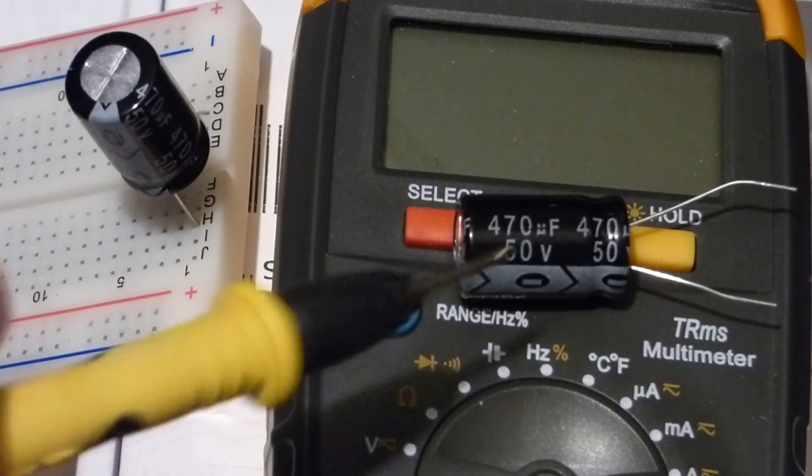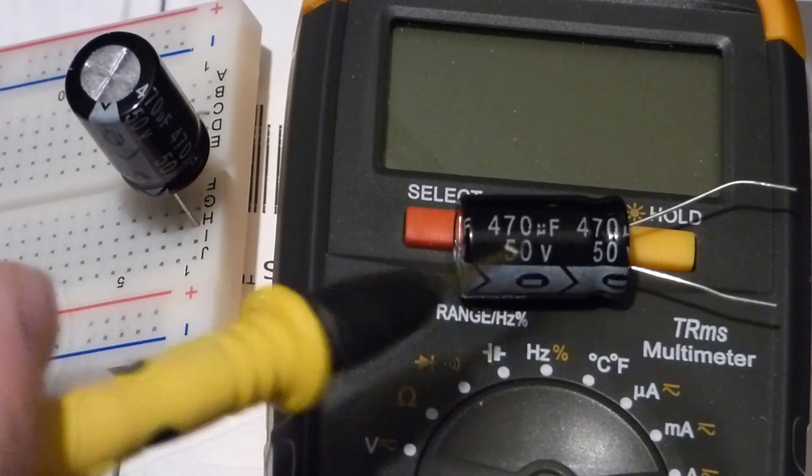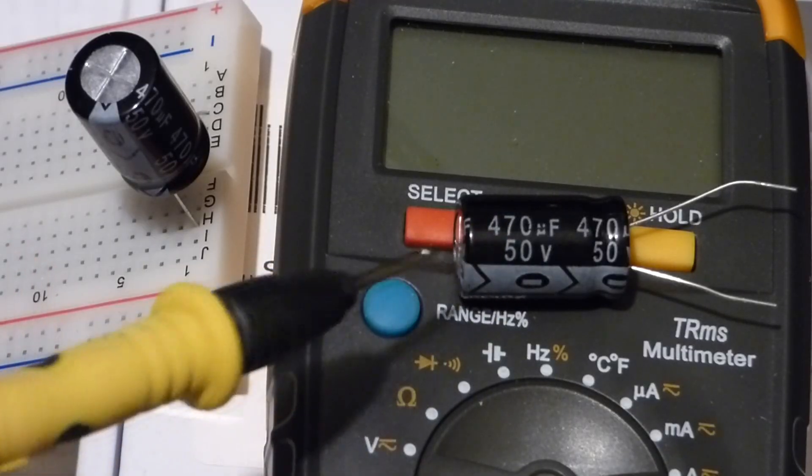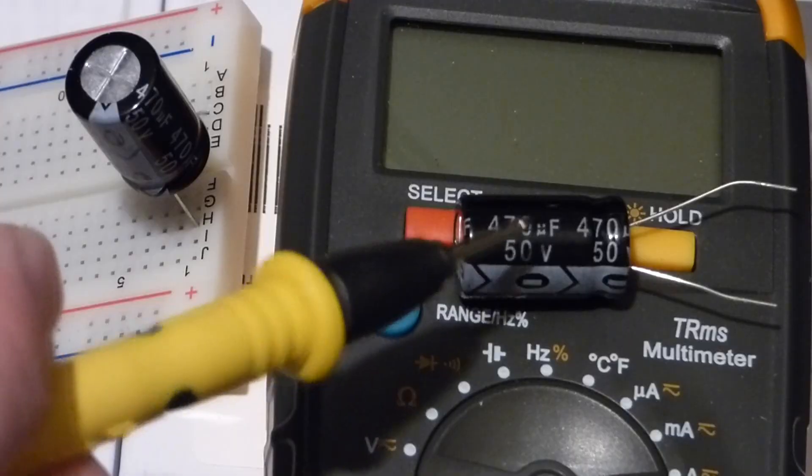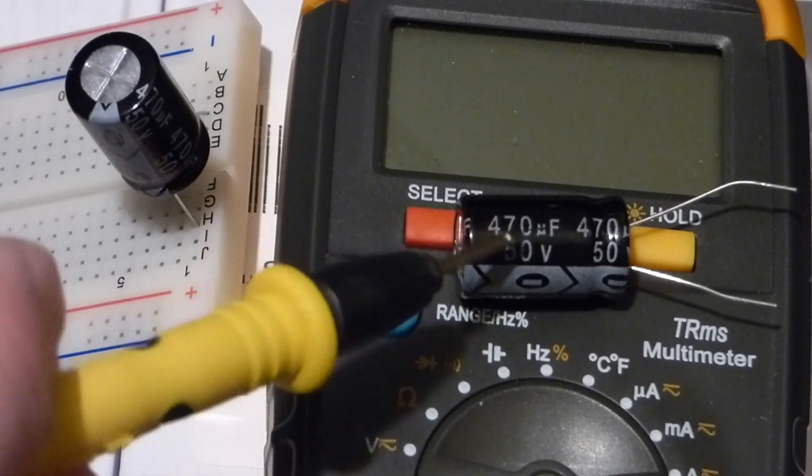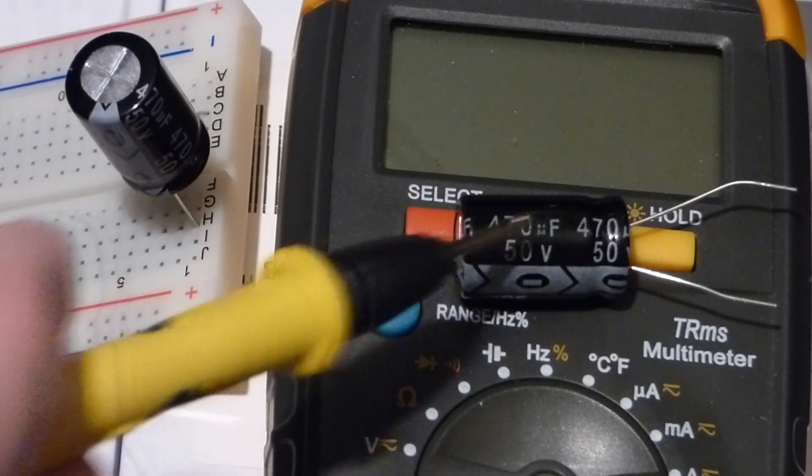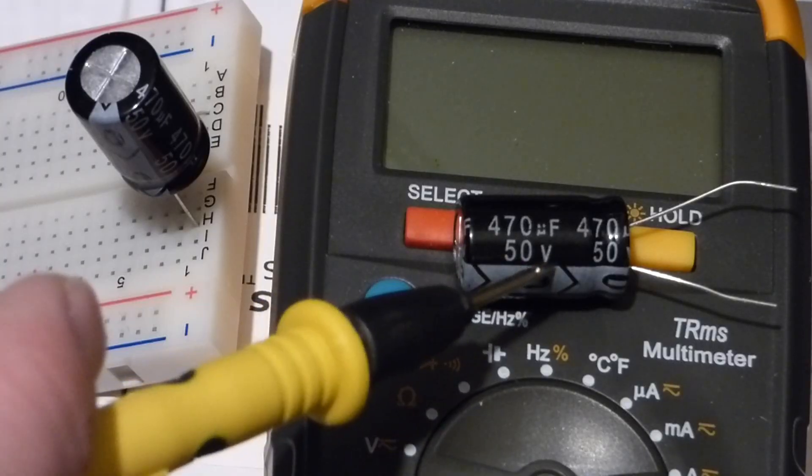In this video we're going to be measuring capacitors in series and in parallel. We're going to be mostly using capacitors of this size here. This is 470 microfarad and can be charged up to 50 volts.